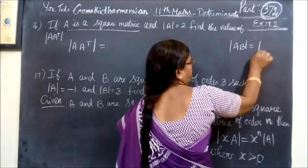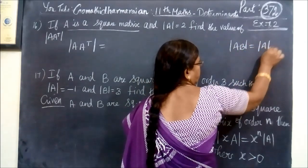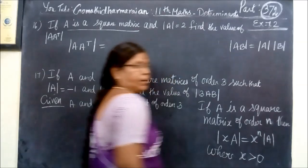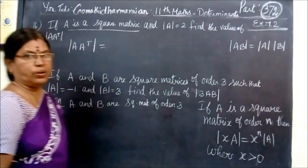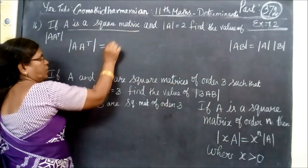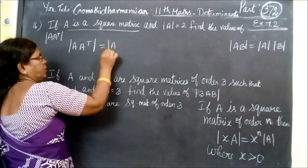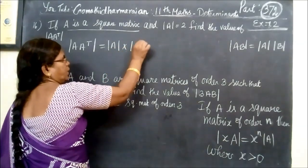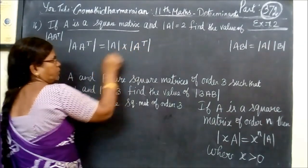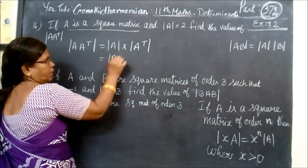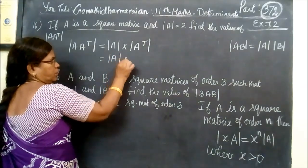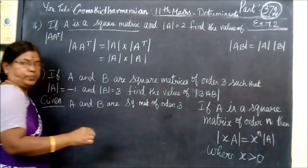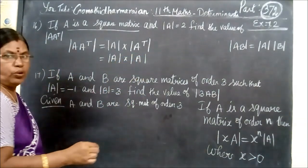You can write this as determinant A, then determinant B. In this way, you are writing determinant A into determinant A transpose. But determinant A transpose is equal to determinant A itself. This is our property.